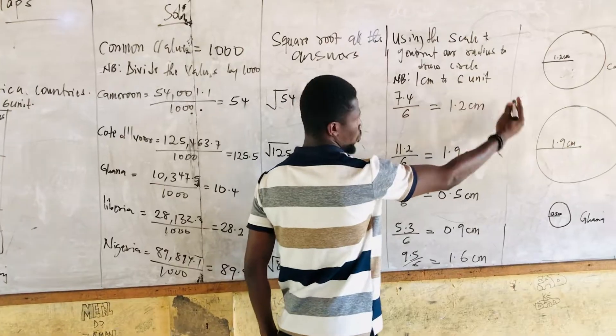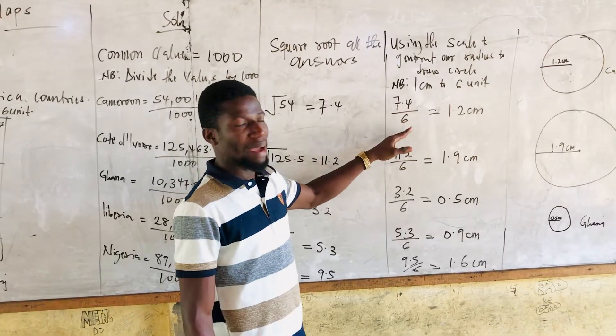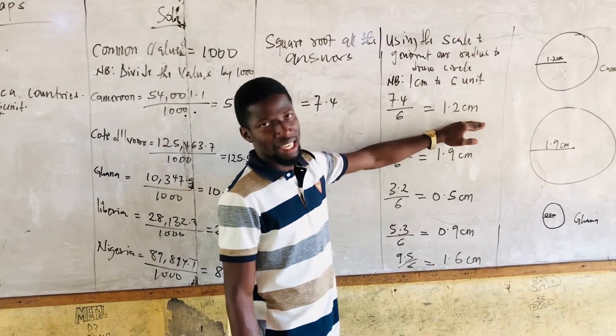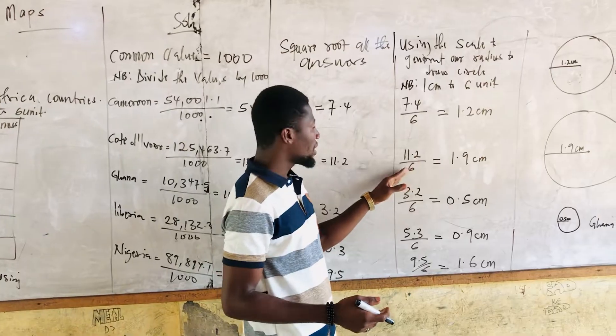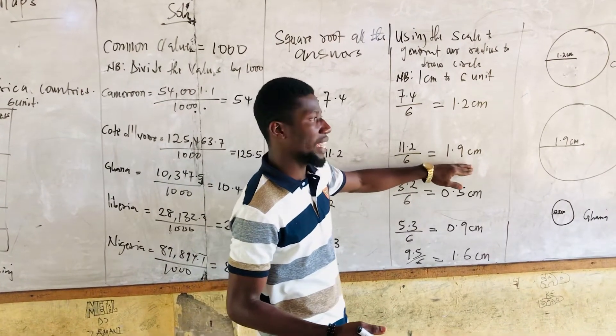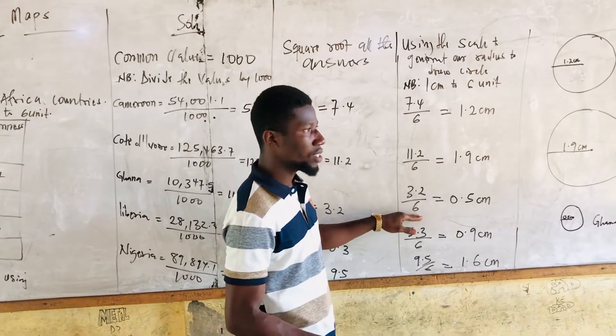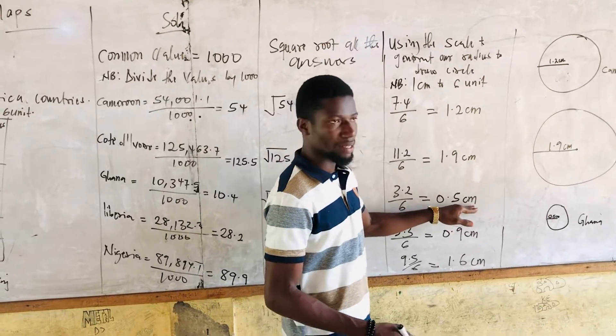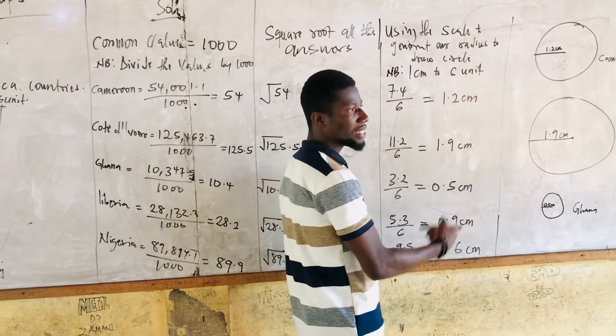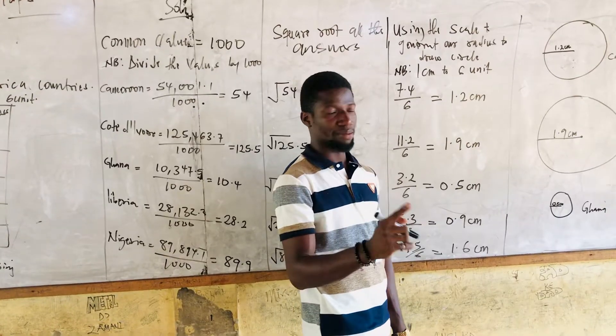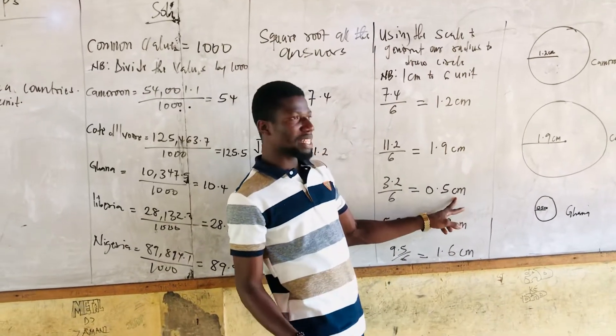Note, the scale is 1 centimeter to 6 units. For Cameroon, we are having 7.4 divided by 6, which gives us 1.2 centimeters. For Côte d'Ivoire, we are having 11.2 divided by 6, which results in 1.9 centimeters. Then we have Ghana: 3.2 divided by 6, resulting in 0.5 centimeters. Remember, there is 0 here for the centimeters and 5 for your millimeters. 10 millimeters is equivalent to 1 centimeter.